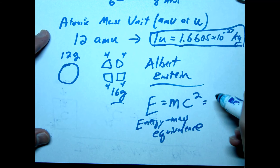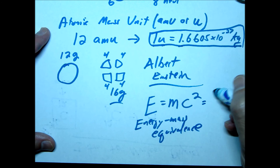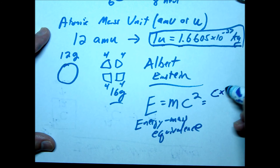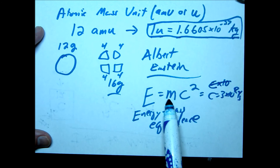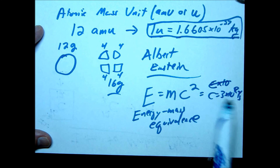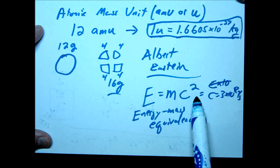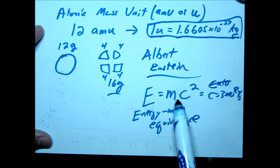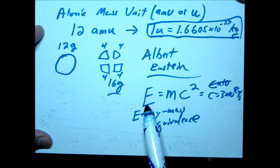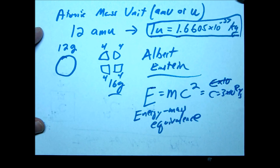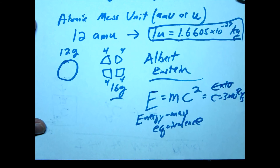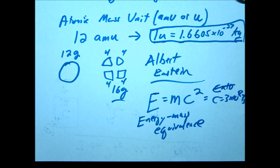Just to be clear, c is the speed of light: c equals 3 times 10 to the 8th meters per second. Once you square that, you get 9 times 10 to the 16th — so a little bit of mass is going to give you a lot of energy. This is kind of the foundation for this unit, and we're going to use this as we start talking about nuclear physics. We'll go into more details in the next video.